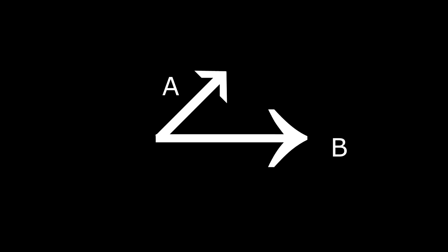Here are two vectors A and B. We want to know the portion of one vector that lies along the other. To do this, we slide the two vectors until they are placed tail to tail. It's okay to move a vector around as long as you don't turn it or stretch it. Theta is the smallest angle between the two vectors when they are placed tail to tail. To be sure that we are using the correct angle, we'll often specify that this is theta sub tail to tail.